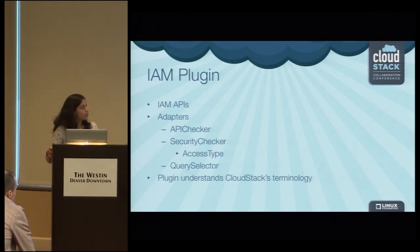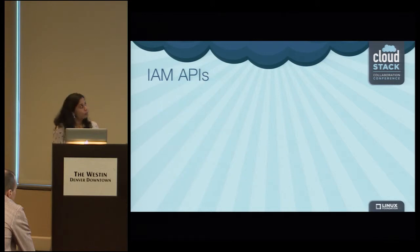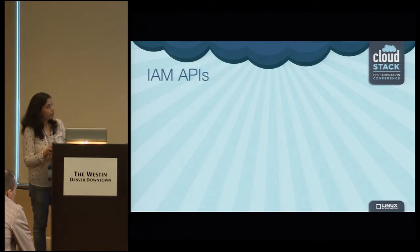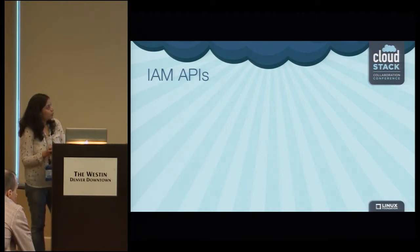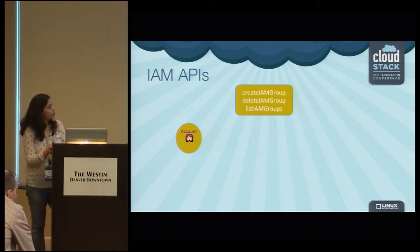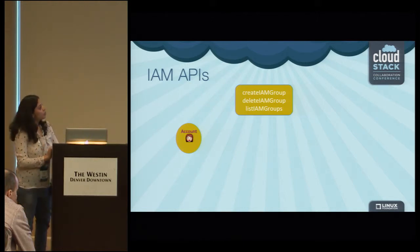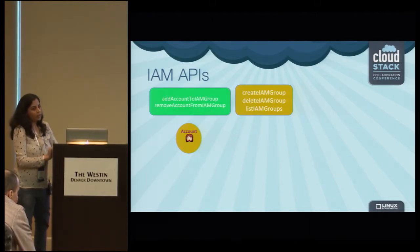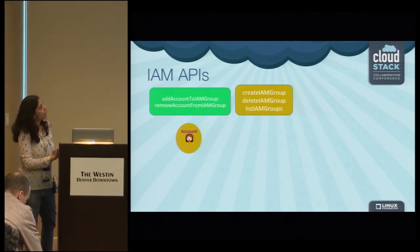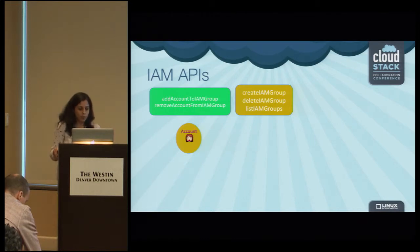There are three adapters the plugin provides: API checker, security checker, and query selector, each serving different purposes. The IAM APIs are important because the plugin must reflect the CloudStack model into the IAM model. For the CloudStack account entity, we have APIs to create, delete, and list IAM groups, and APIs to add an account to an IAM group and remove an account from an IAM group.